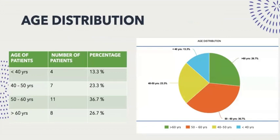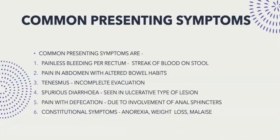According to age distribution, less than 40-year-old patients accounted for only 13% of patients diagnosed with rectal cancer. The most common age group with rectal cancer was between 50 to 60 years. Common presenting symptoms include painless bleeding per rectum, streak of blood on stool, pain in abdomen with altered bowel habits, tenesmus, incomplete evacuation, spurious diarrhea — seen in ulcerative type lesions — and pain with defecation due to involvement of anal sphincters, as well as constitutional symptoms such as anorexia, weight loss, and malaise.